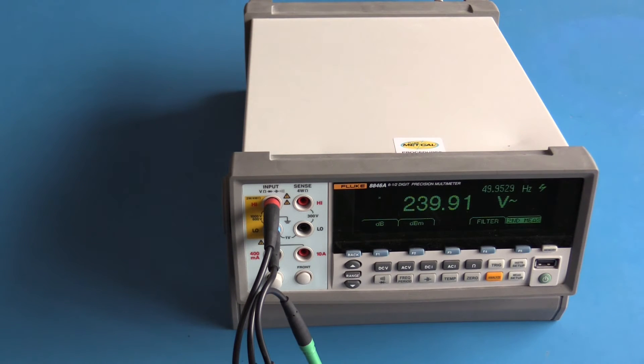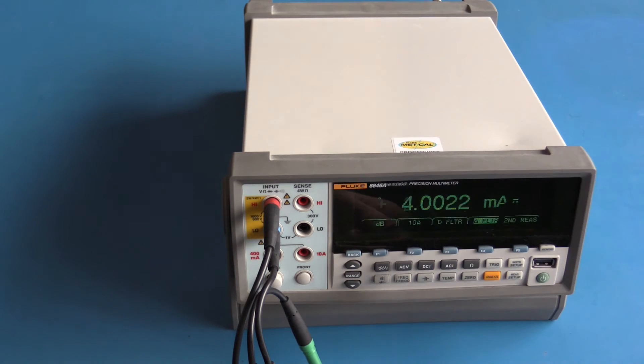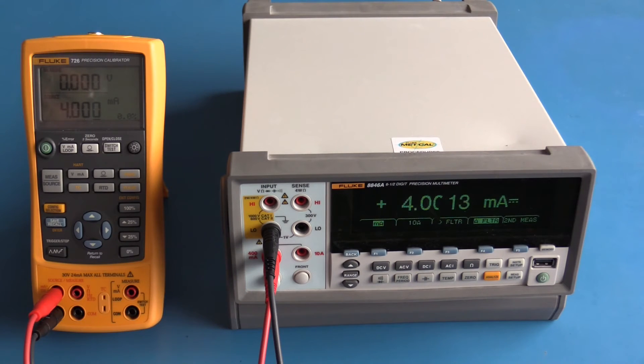The Fluke 726 is now sourcing 4 milliamps. I'm using the 400 milliamp input jack and we're looking at DC current. The meter's resolution is five digits, one PLC integration time, and again these two meters are in quite close agreement with each other.